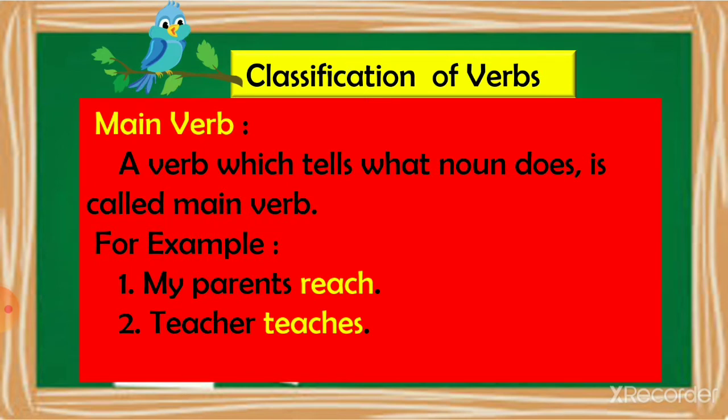Now, classification of verbs. We can classify verbs into two kinds. The first one is the main verb. Read the sentences: my parents are rich, or teacher teaches. In these two sentences, the highlighted words — rich and teaches — show the action done by the subject, by parents and teacher. So these are main verbs. A verb which tells what a noun does is called a main verb.